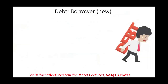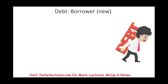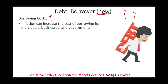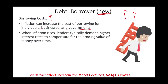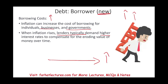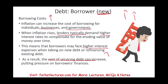Now let's talk about how inflation affects debt — that is, when you borrow money. For new borrowing: if we have inflation, the Federal Reserve increases the interest rate, so the borrowing cost is higher. Inflation can increase the borrowing cost for individuals, businesses, and governments — it costs more money to operate. When inflation rises, lenders typically demand a higher rate of return to compensate, especially for longer-term loans. This means borrowers may face higher interest rate expense when taking on new debt or refinancing existing debt, putting pressure on the borrower's finances.